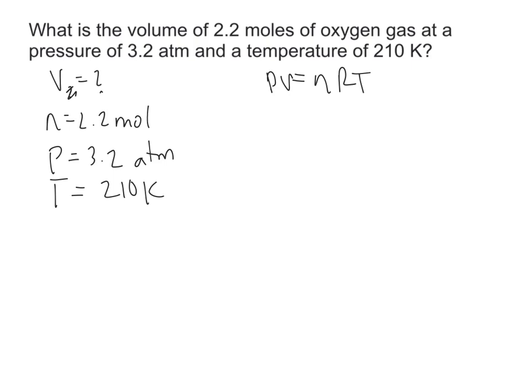Now we're trying to solve for volume, so volume is equal to nRT over P. In this situation, we're going to plug our numbers in. However, our R value, remember, is 0.0821 liters times atm per mole kelvin.